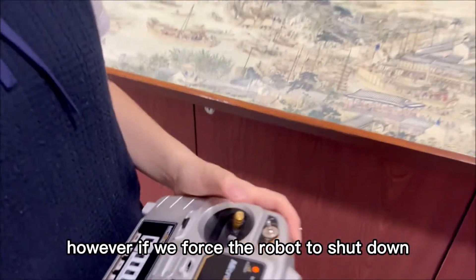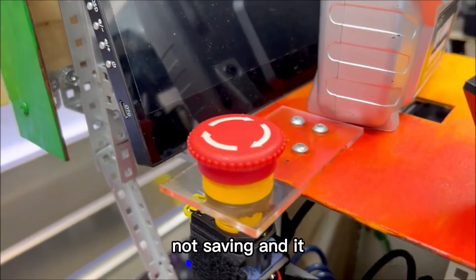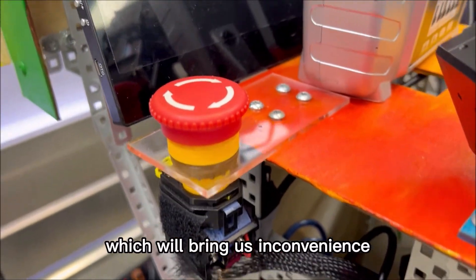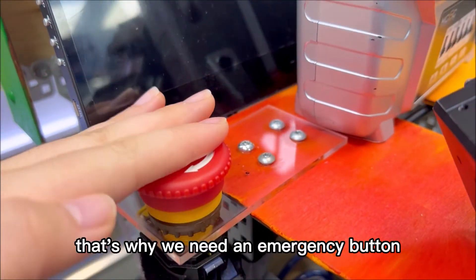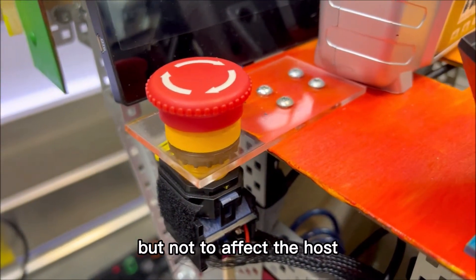However, if we force the robot to shut down, it may lose the program that we typed because of not saving, and it will waste a lot of time to turn it on and write the program again, which brings inconvenience. That is why we need an emergency button to shut down the robot's chassis but not affect the host.